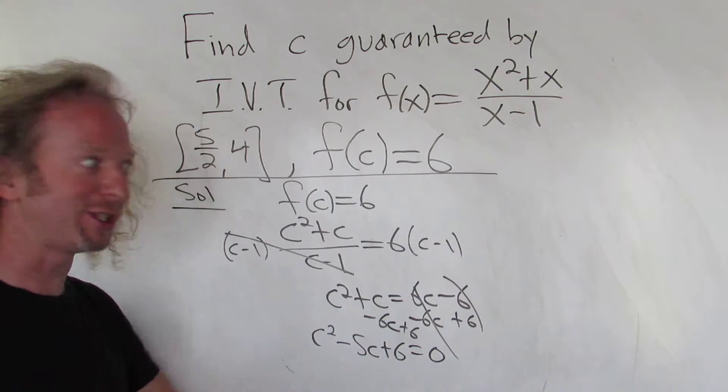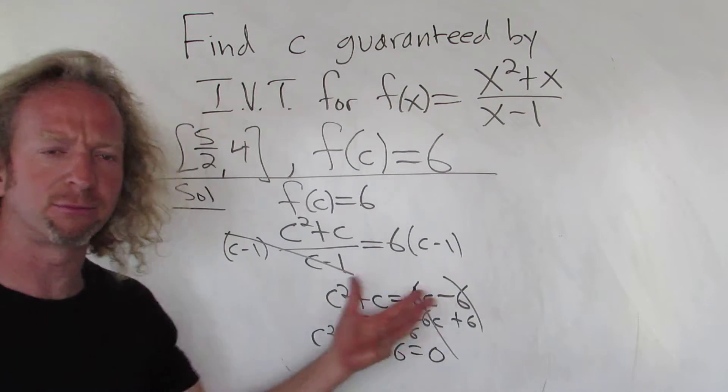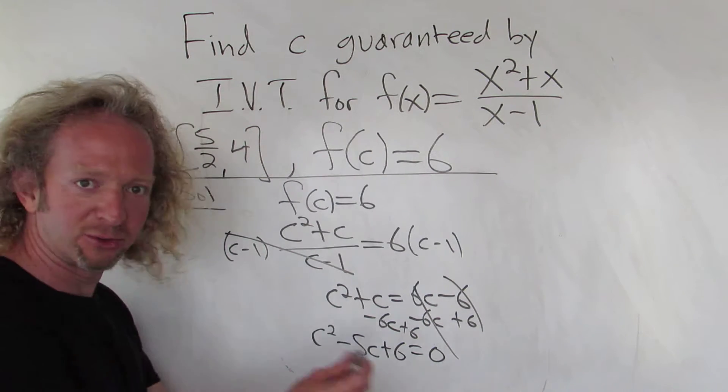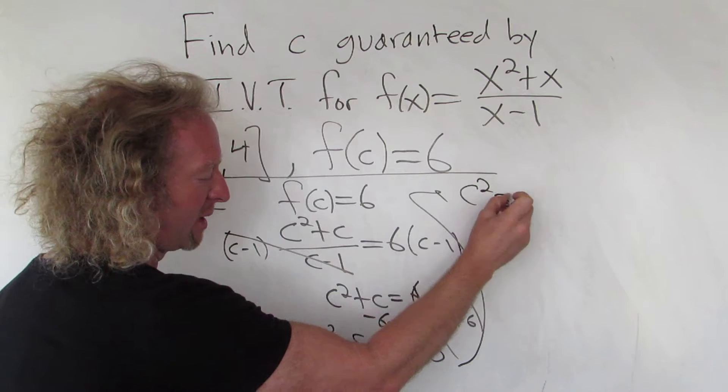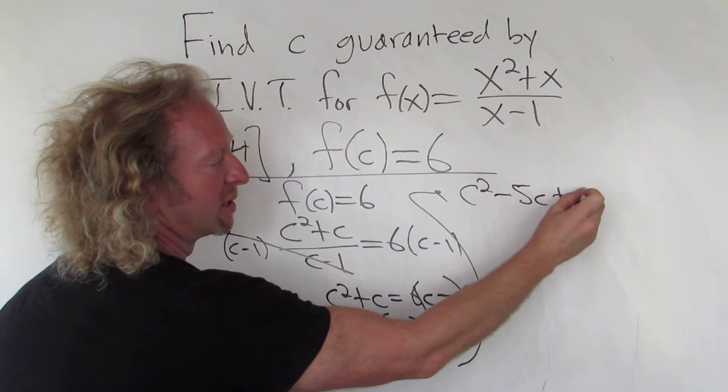This should factor. If it doesn't factor, we did it wrong. Why? Because it's a math problem from some book. You know, so usually they work out. Let me write it again up here. So we have C squared minus 5C plus 6 equals 0.